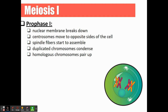In prophase one, the nuclear membrane is going to break down — remember, the nuclear membrane protects what's inside the nucleus, and we need to allow these chromosomes to flow freely. We're going to see the centrioles move to opposite poles of the cell, pushing out spindle fibers, which are like a spider web that grabs the chromosomes at the centromere. Duplicated chromosomes will condense, and homologous chromosomes are going to pair up, as you can see in the picture.